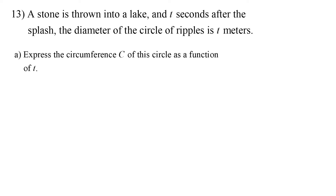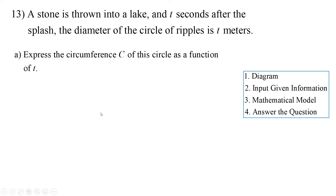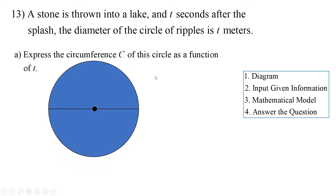Number 13: a stone is thrown into a lake, and t seconds after the splash, the diameter of the circle of ripples is t meters. The stone hits the water and there's a circle of ripples with diameter t. Part a: express the circumference c of the circle as a function of t. The circumference of any circle is pi times diameter, and since diameter is t, C(t) equals pi times t.